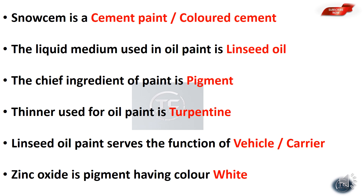The chief ingredient of paint is pigment. The thinner used for oil paint is turpentine. The thinner or solvent is used to change consistency — it makes painting easy and smooth, so it is called a thinner.